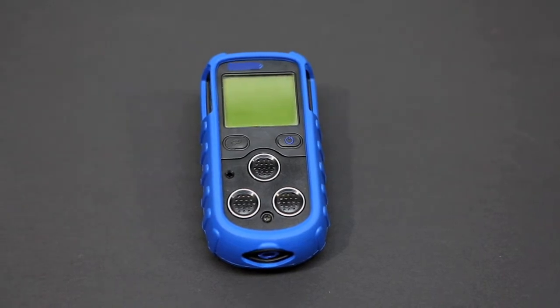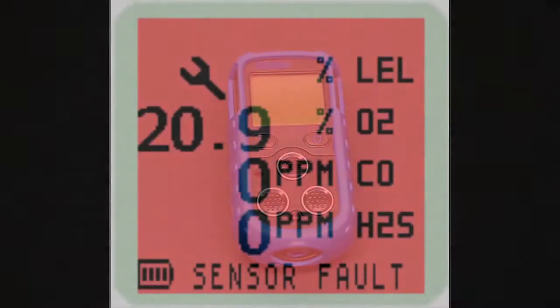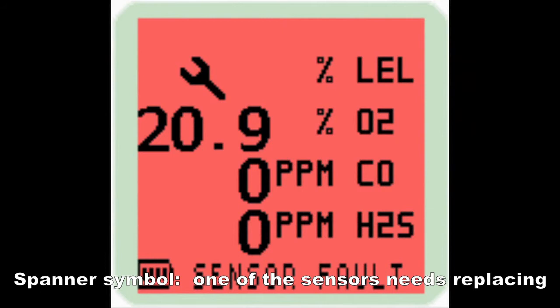If a spanner symbol appears in place of one of the sensor readings and the words sensor fault are at the foot of the screen, this indicates either an electrical problem or that one of the sensors needs replacing.